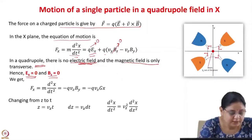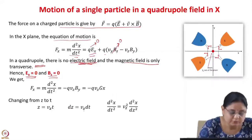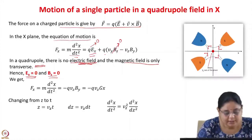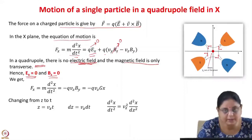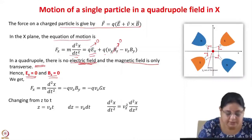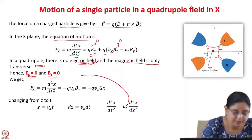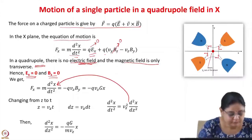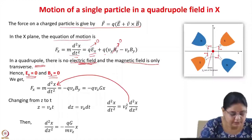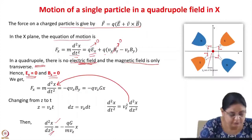Now let us change the coordinates from z to t. We know that z = vz·t, so dz = vz·dt. Taking the second derivative and simplifying, we get d²x/dt² = vz²·(d²x/dz²). We substitute this into the equation to get the differential equation now in terms of z instead of t.